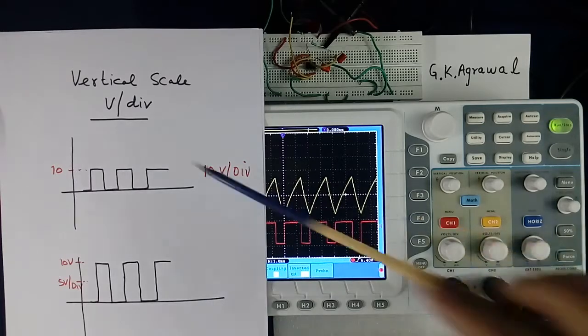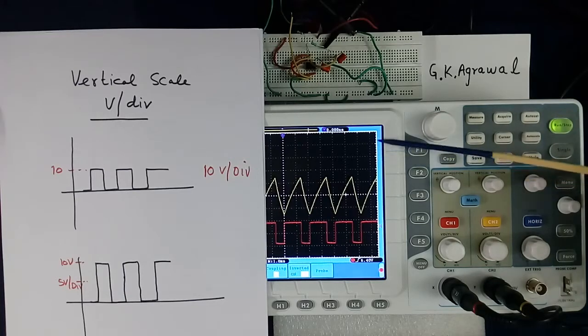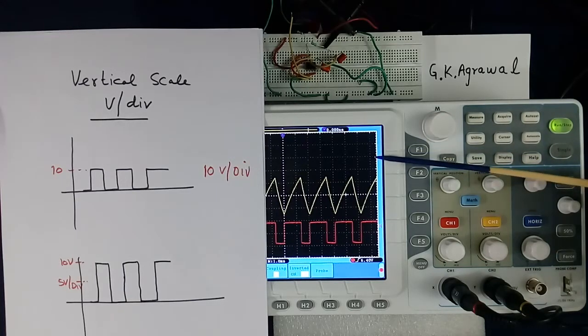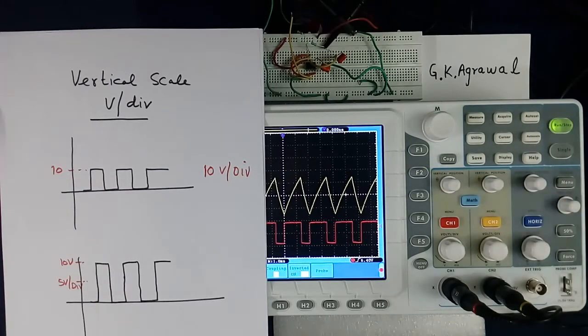Now what is division? This is one division. You are seeing one bigger line here, one bigger line here. About 1 cm in my scope. Other scopes this may be different. So this is one division, from here to here.